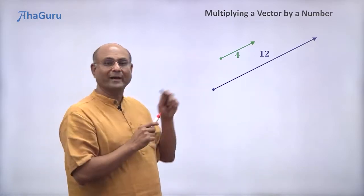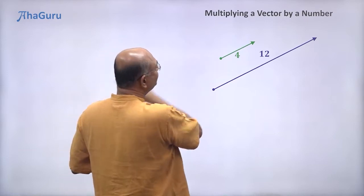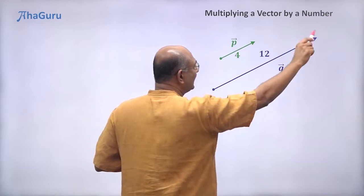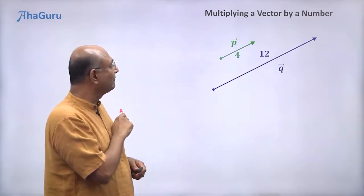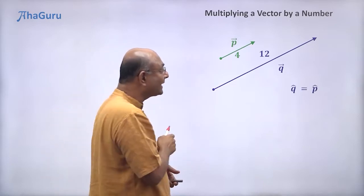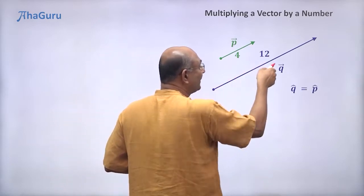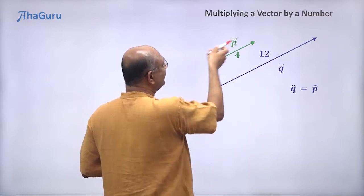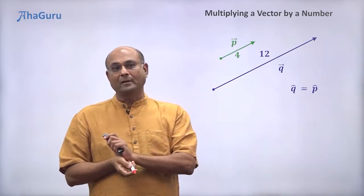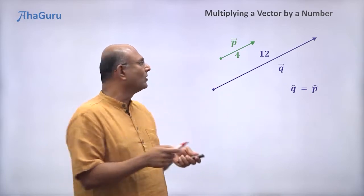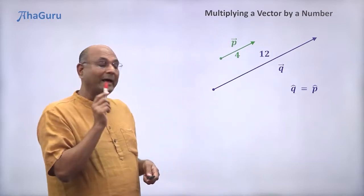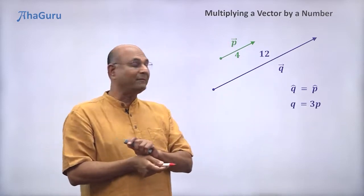Now let me look at these two vectors. Let me say that is called p vector and this is called q vector. The length of p vector is 4 and the length of q vector is 12. Are they pointing in the same direction? Yes, they are in the same direction. So q cap is the same as p cap — the directions are the same. But are the magnitudes the same? No. This is 4 and this is 12.